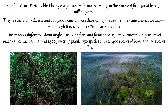Rainforests are Earth's oldest living ecosystems with some surviving in their present form for at least 70 million years. They are incredibly diverse and complex, home to more than half the world's plant and animal species, even though they cover just 6% of the Earth's surface. A 10 square kilometer patch can contain as many as 1500 flowering plants, 750 species of trees, 400 species of birds and minimum 150 species of butterflies.